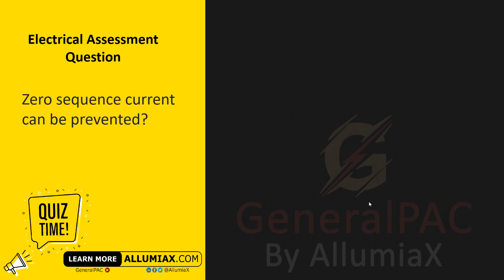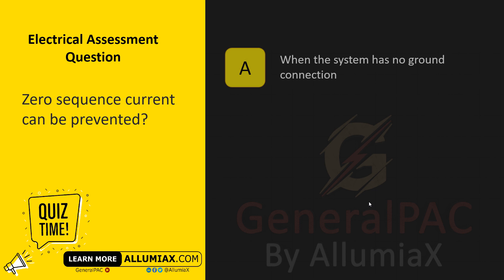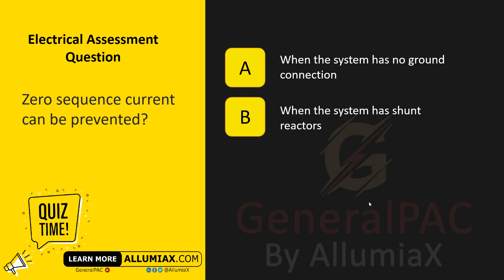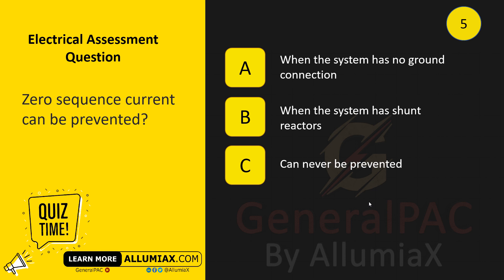Can zero-sequence current be prevented? A. When the system has no ground connection. B. When the system has shunt reactors. C. It can never be prevented.